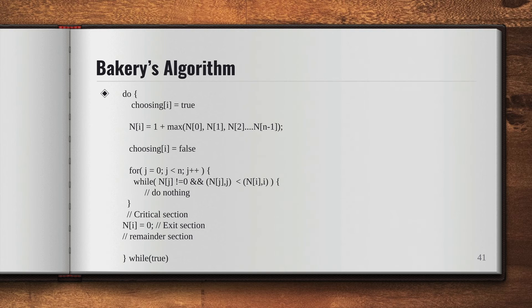So that is why it chooses the token number which is larger than the previous token number. Once it chooses that, then it sets the choosing[i] to false, which means it's letting the other processes know that it has finished choosing the token. Then it enters the loop to evaluate the status of other processes.